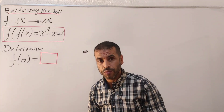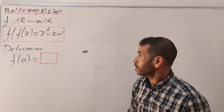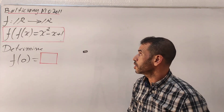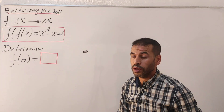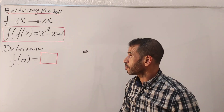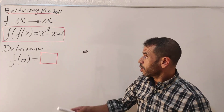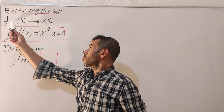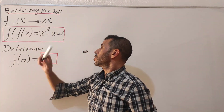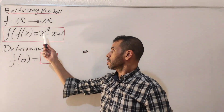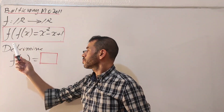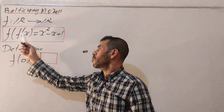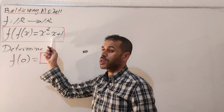In today's video, here is a nice problem coming from the Baltic Wave Mathematics Olympiad, edition 2011. We have f as a function from real numbers to real numbers, and we have the composite form f of f of x equals x squared minus x plus one.